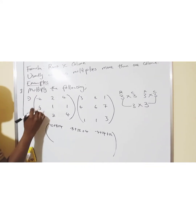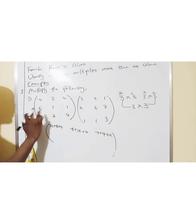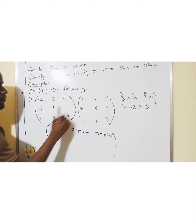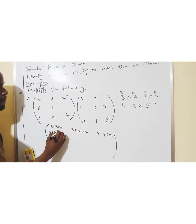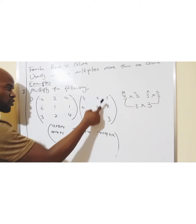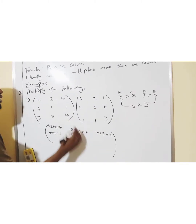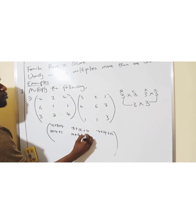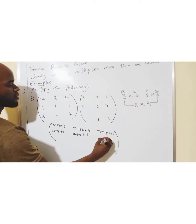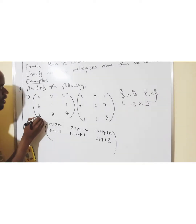Now we have this row. So, this row is going to multiply this column, that column, and that column. Pay attention. This will be 6 times 3, which gives us 18. Then 1 times 4 is plus 4. 1 times 1 is 1. The same row with this column: 6 times 2 is 12, plus 1 times 6 is 6. Then 1 times 1 is plus 1. I move on: 6 times 1 is 6.